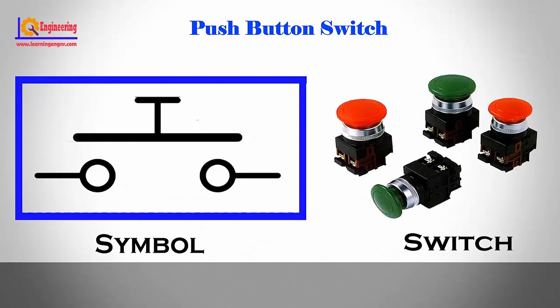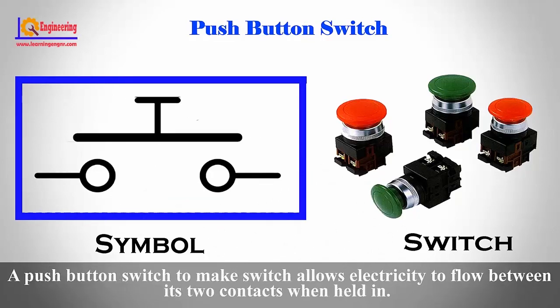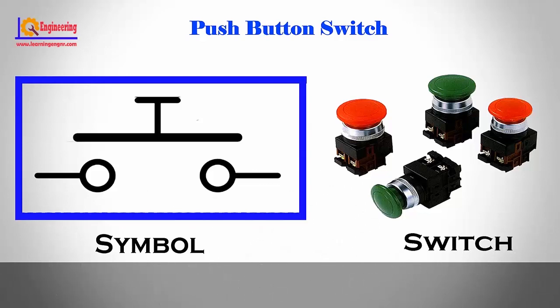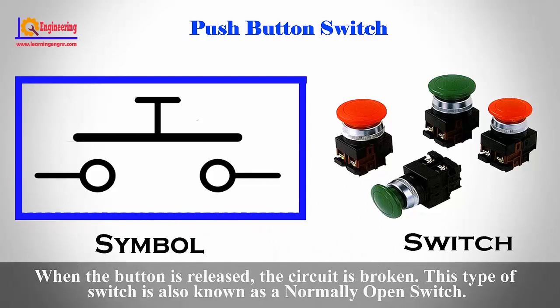Push button switch. A push button make switch allows electricity to flow between its two contacts when held in. When the button is released, the circuit is broken. This type of switch is also known as a normally open switch.